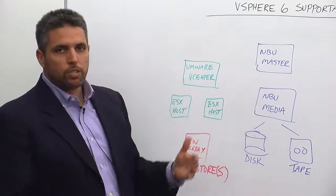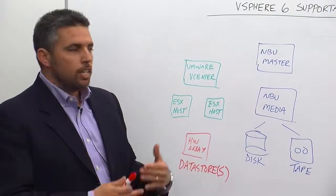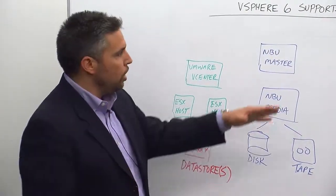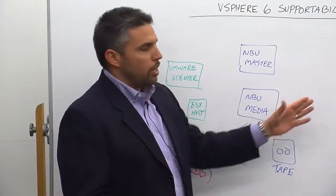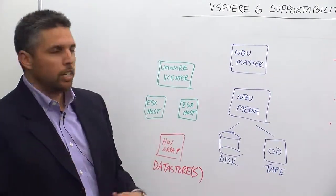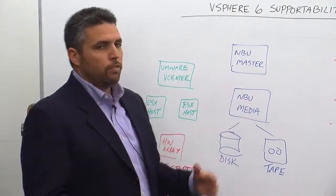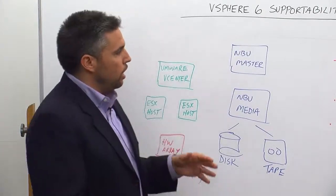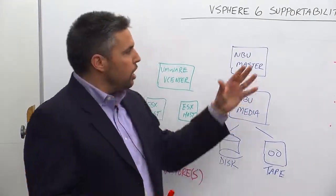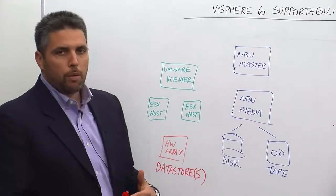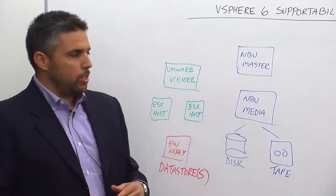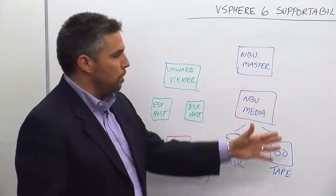Also new in vSphere 6 is VM hardware level 11. As part of the VIP query process, we can actually capture that metadata for VM hardware 11. That's very important, because we want to ensure the backup and recovery capabilities and the metadata associated with the virtual machines are being protected.